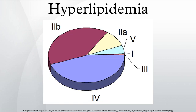Type II hyperlipoproteinemia, by far the most common form, is further classified into type IIa and type IIb, depending mainly on whether there is elevation in the triglyceride level in addition to LDL cholesterol. Type IIa may be sporadic, polygenic, or truly familial as a result of a mutation either in the LDL receptor gene on chromosome 19 or the APOB gene. The familial form is characterized by tendon xanthomas, xanthelasma, and premature cardiovascular disease. The incidence is about 1 in 500 for heterozygotes and 1 in 1 million for homozygotes.